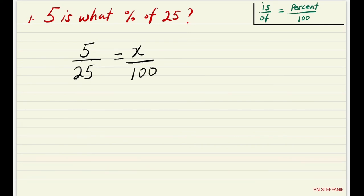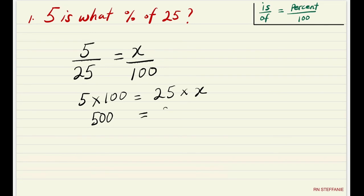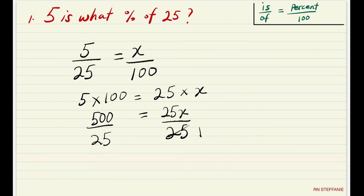At this point we cross multiply: 5 times 100 is equal to 25 times X. 5 times 100 is 500, equal to 25X. We want X to stand on its own so we divide both sides by the number in front of X, which is 25. So X is equal to 20.